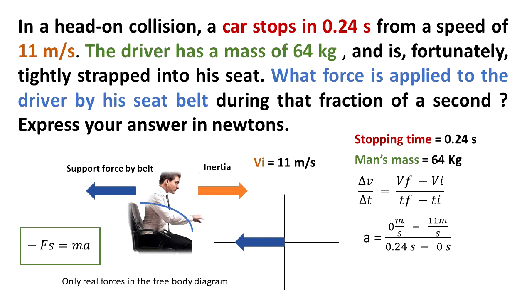Our change in time is the final time is 0.24 seconds. That's our stopping time, and we say that initial time is just zero, the moment when the person slammed the brakes. We use the calculator and we get that the acceleration is negative 45.8 meters per second squared.